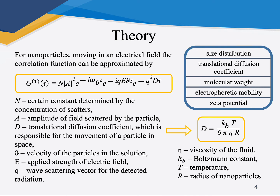In this work, to study the parameters of fullerenol particles, the method of dynamic light scattering was chosen. This method allows one to compose a reliable picture of the distribution of the studied particles by size, and also provides electrophoretic mobility and zeta potential. It has advantages of speed, small required amount of sample, and low control voltage. This technique is based on measuring the correlation function of the intensity fluctuation of the scattered light, and you can see the approximated autocorrelation function.